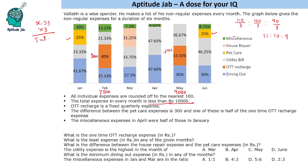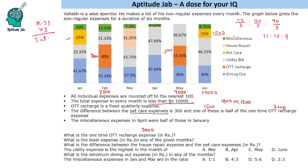The one-time OTT recharge expense is 3000. One pet care expense is half of 3000, which is 1500. The other pet care expense differs by 300, so it is either 1800 or 1200. Now we check: if the January pet care is 1500 and it is 25% of January's total, that gives a total of 6000 for January. So January's total is 6000 and the pet care there is 1500.